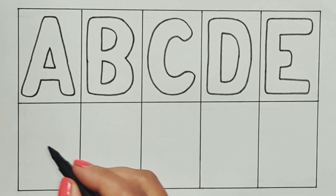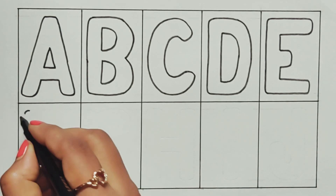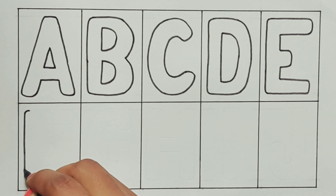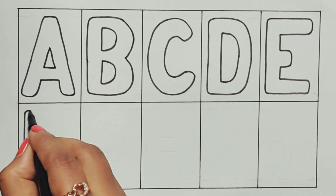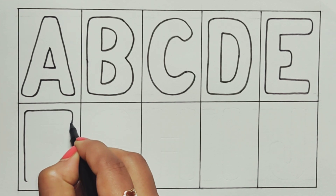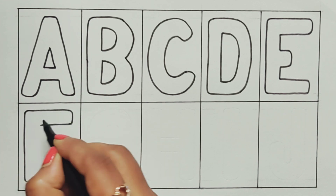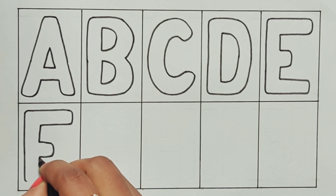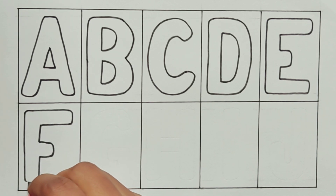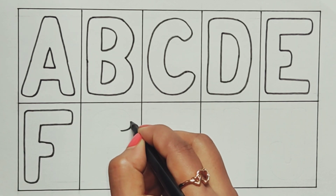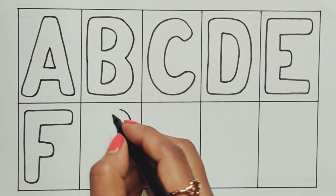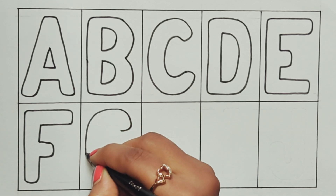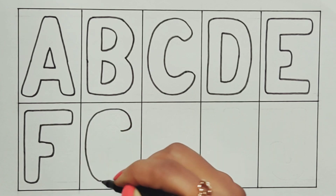A, B, C, D, E, F, G, H, I, J, K, L, M, N, O, P, Q, R, S, T, U, V, W, X, Y, and Z. Now I know my ABCs, next time won't you sing with me?